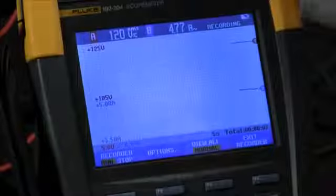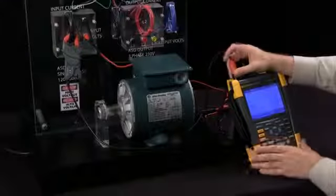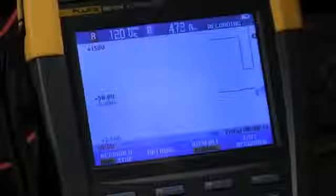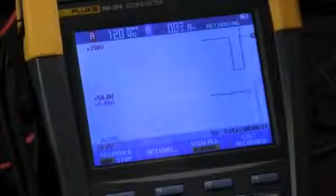If we have an interruption and I'll cause that by disconnecting the probe you see how we're dropping out on channel 1 and I can also induce a fault into channel 2.